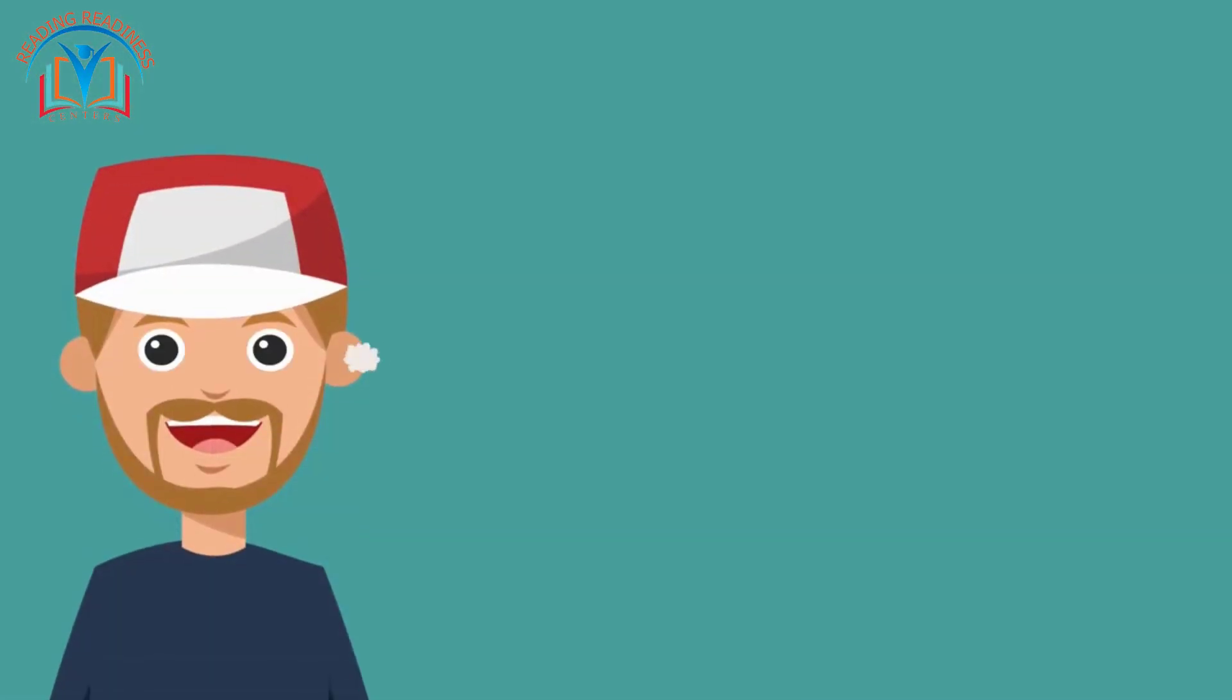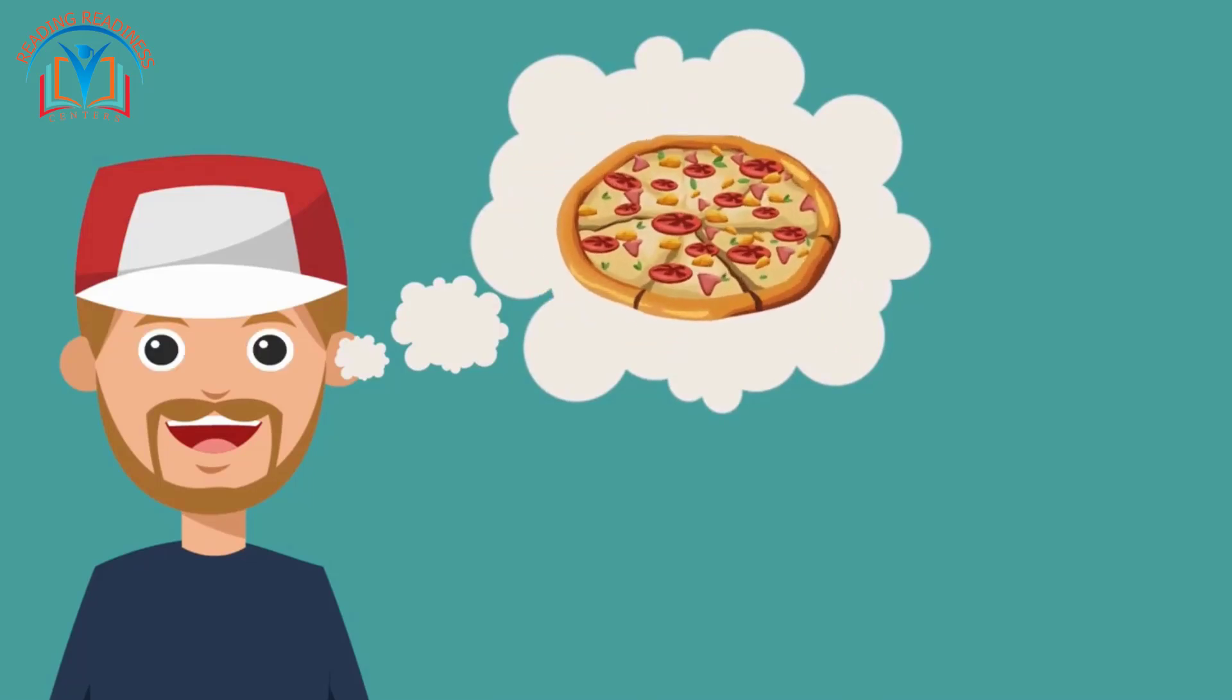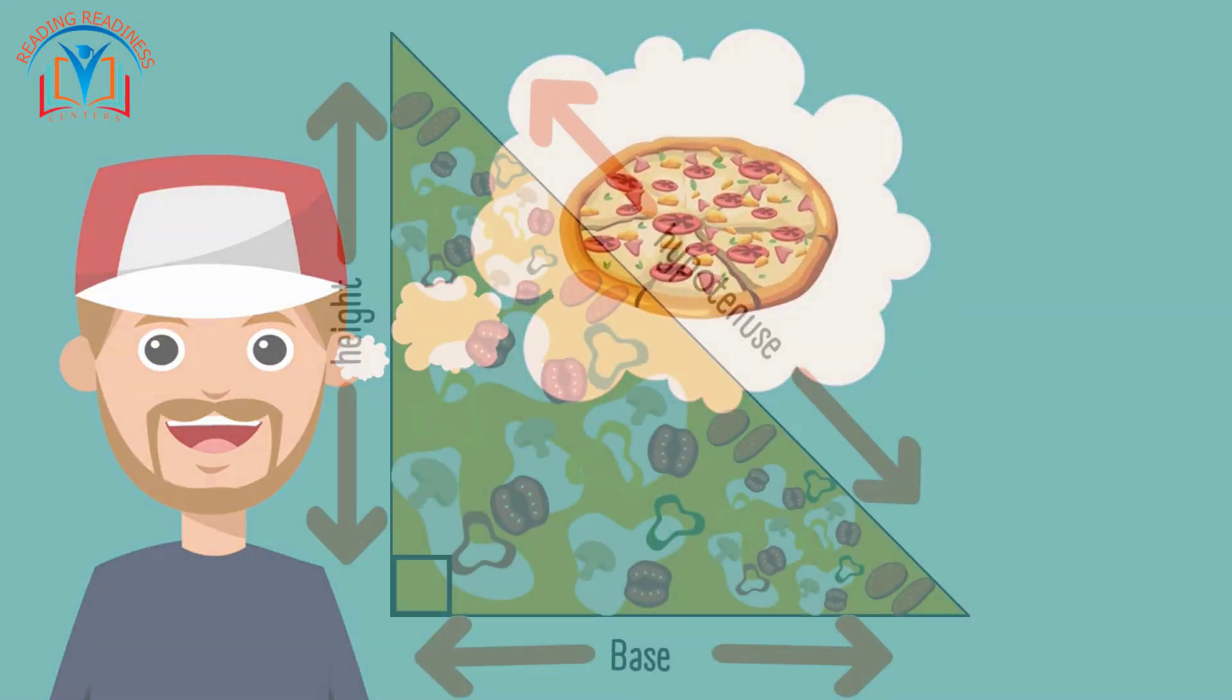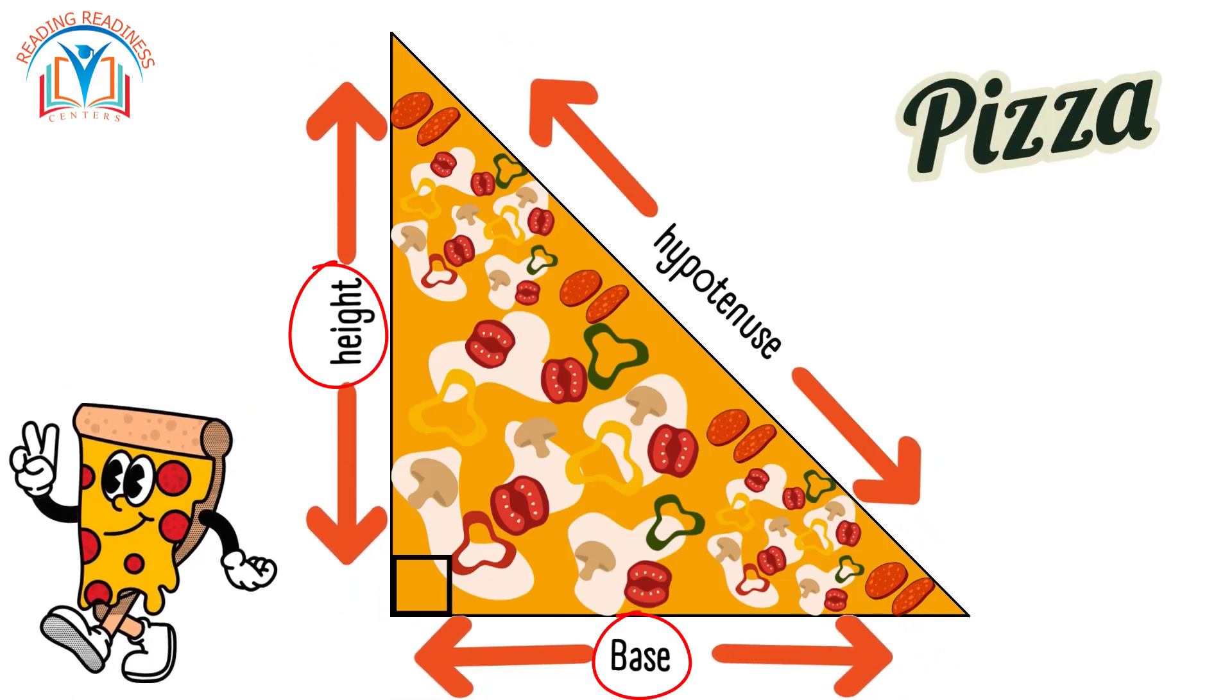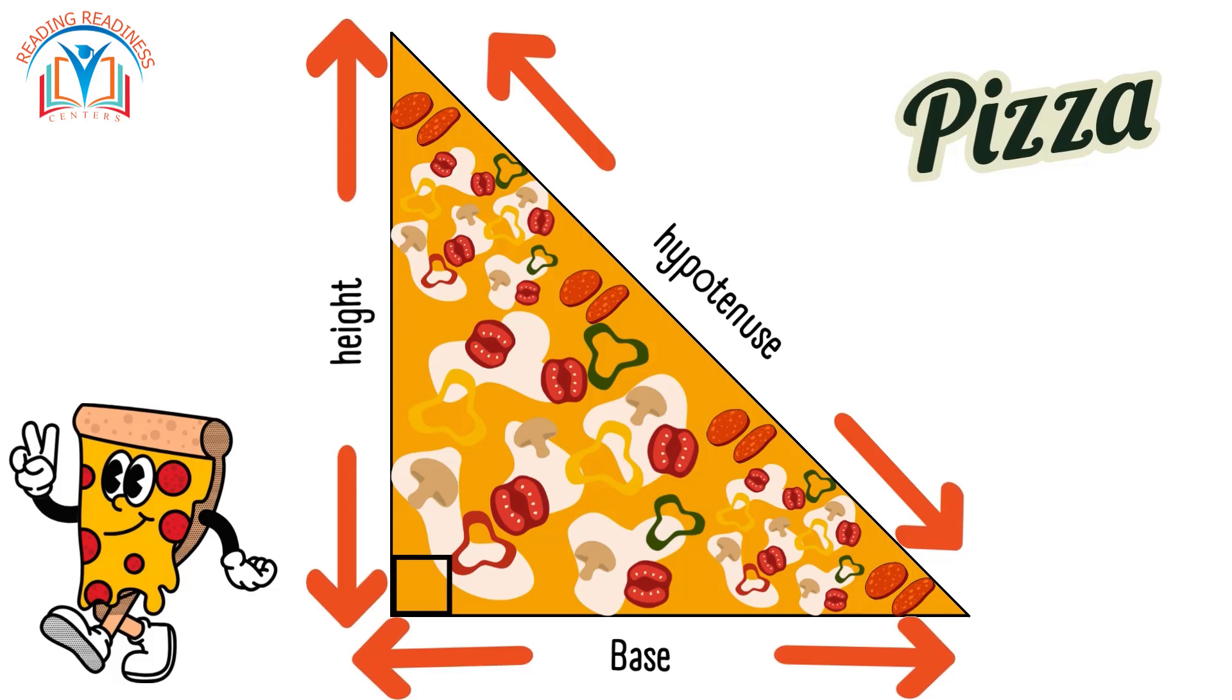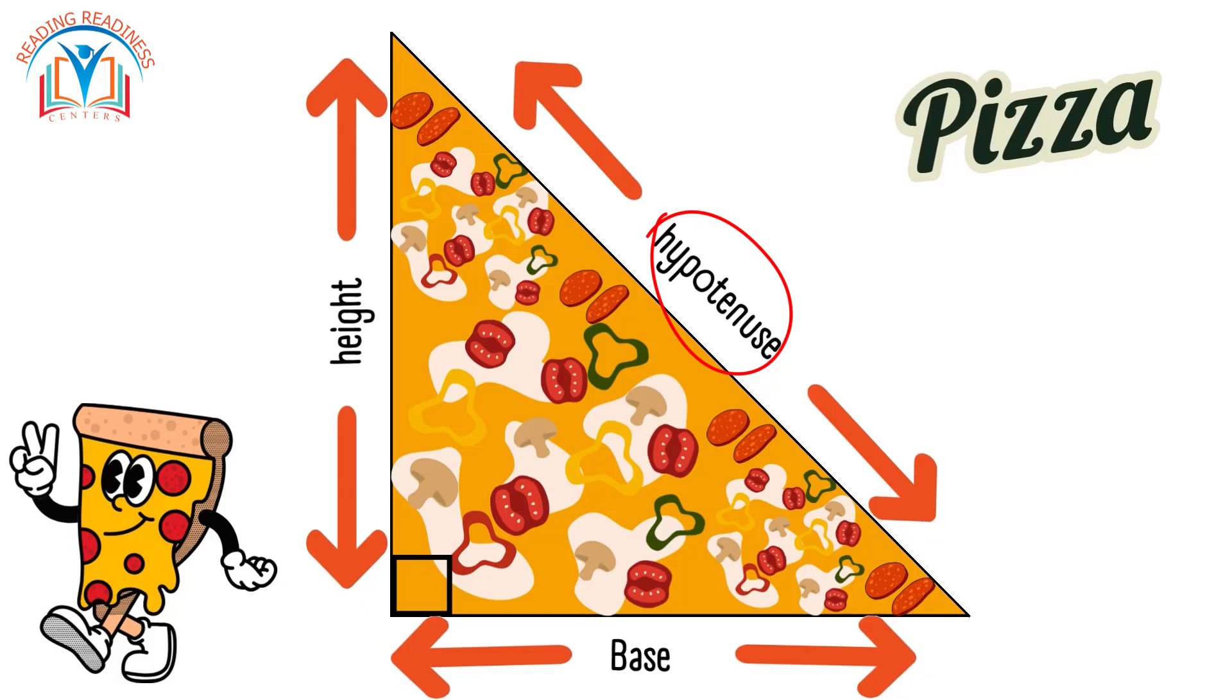Imagine a slice of pizza. That yummy triangle with a perfectly straight corner is called a right triangle. It has two special sides, the base and the height, just like a pizza has a crust and a cheesy point. The longest side, opposite the straight corner, is called the hypotenuse kind of like the pizza's superhero name.